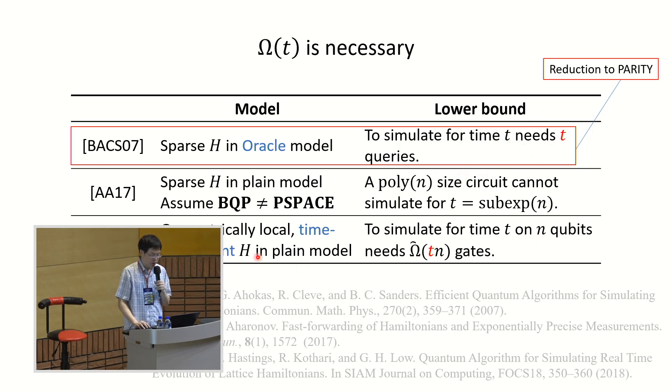We have two other results that are in different models. So the HHKO result also has an omega T lower bound. And the A17 result is a bit different. So the result, the lower bound is actually not quite linear, but it's a different model. It's in plain model where they don't require oracles.